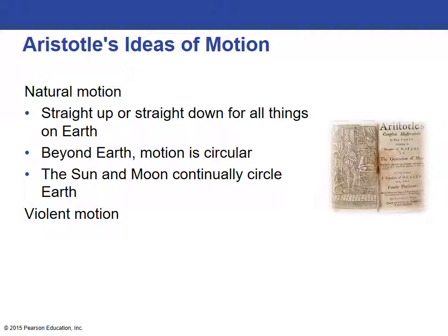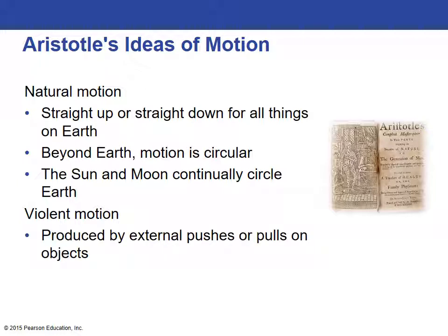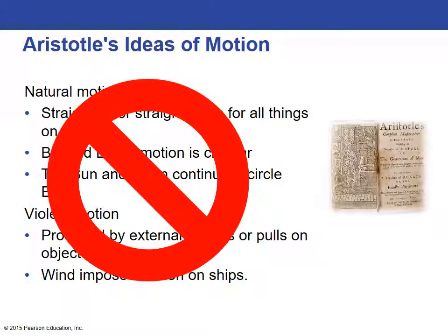Violent motion referred to things that were not natural — things that were a response to an external push or pull, for example wind on a sailing vessel. These are logical ideas, but not what we consider to be true today.